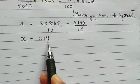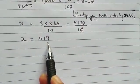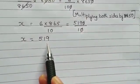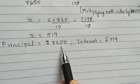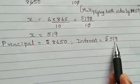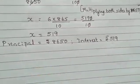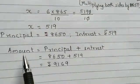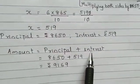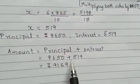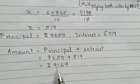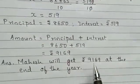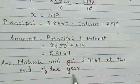So, 519 is the interest that he will get at the end of one year. The question asks for the amount he will receive at the end of the year. Principal is rupees 8650 and interest is rupees 519. Amount equals principal plus interest — that is 8650 plus 519 — which gives 9169. So Mahesh will get rupees 9169 at the end of the year.